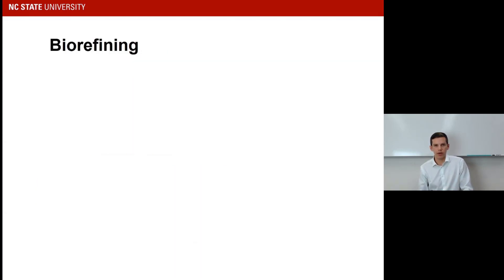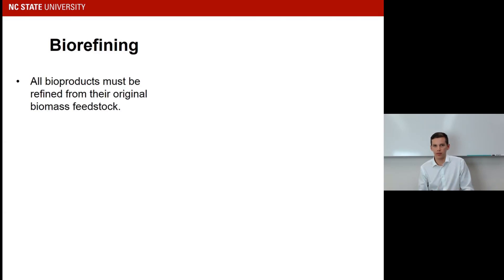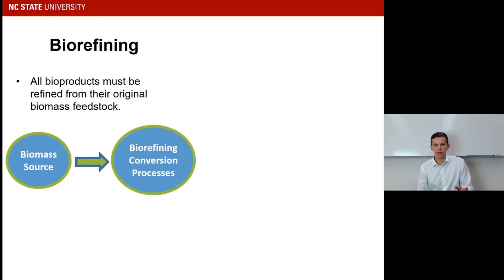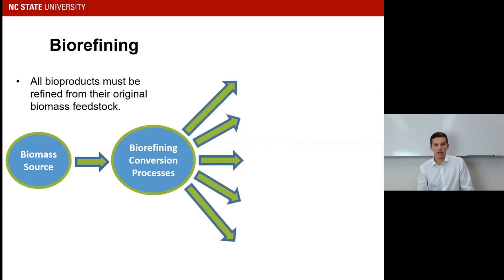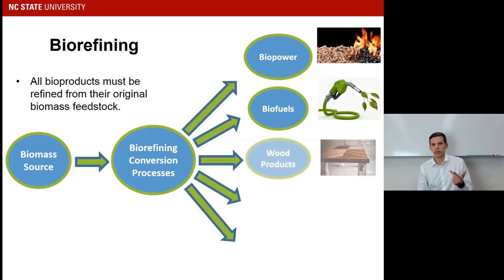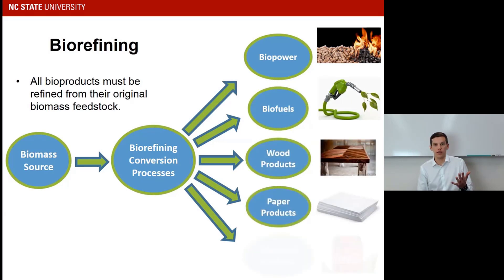To make these different bioproducts, they have to be converted, or refined, from their initial biomass feedstock — that's what we term biorefining. Starting with a biomass source, it goes through some sort of biorefining conversion process, and from that you can get various different bioproducts such as biopower, biofuels, wood products, paper products, and advanced products.